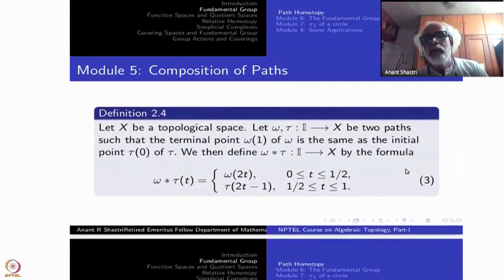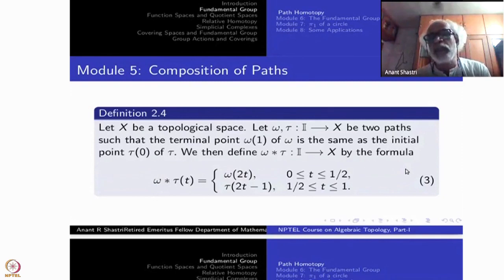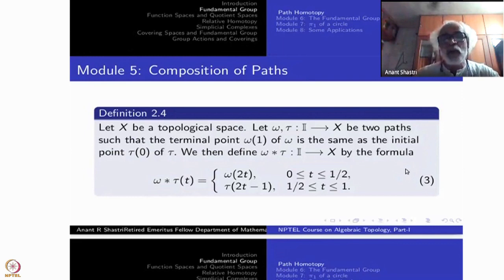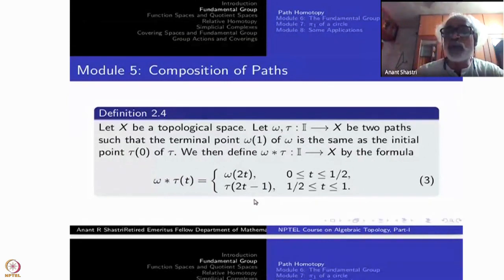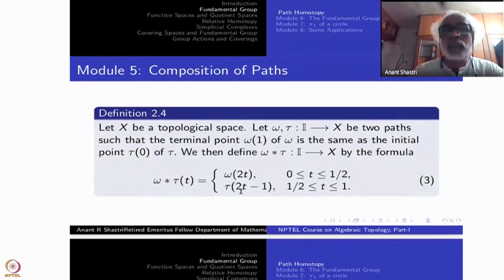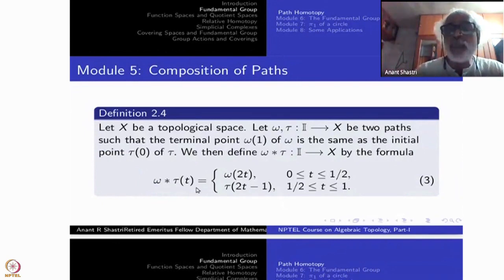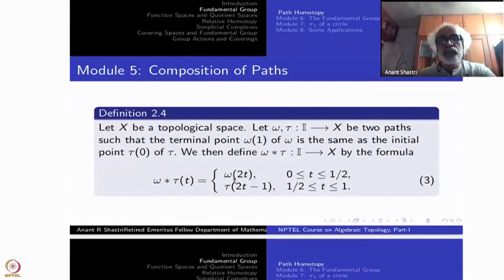In the second half, we define it as τ at double speed, but the origin shifts: starting at 1/2 and ending at 1, so it is τ(2t−1). When you put t = 1/2 in the first piece, you get ω(1), and in the second piece you get τ(0), and those two points are the same. Therefore the resulting function is continuous. Its starting point is ω(0) and its endpoint is τ(1). This is the meaning of composition of two paths.